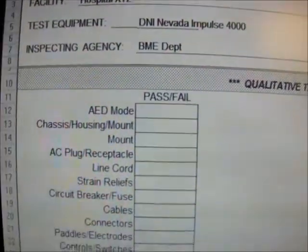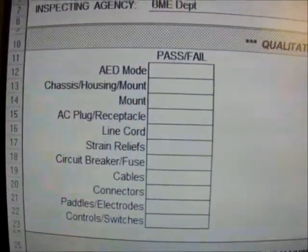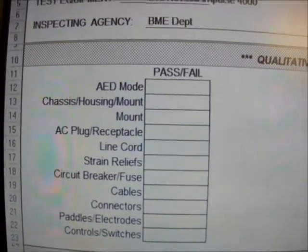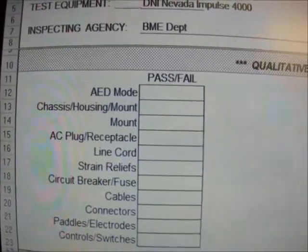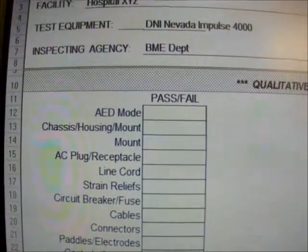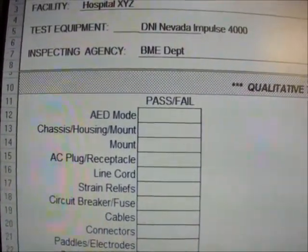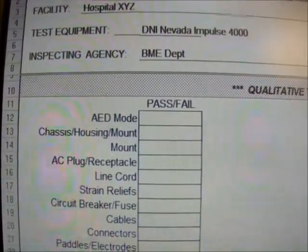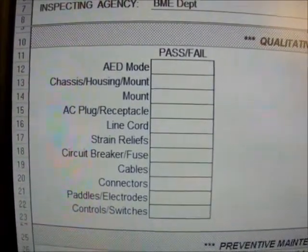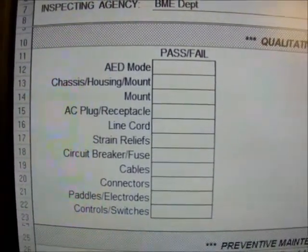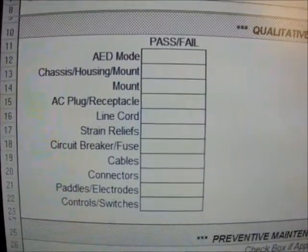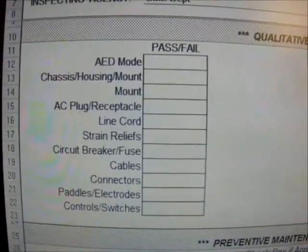Moving along to the qualitative tasks. These are pass or fail tasks, such as AED mode. The following are observations of the AED prompts — both voice and text simulations, such as shock advised, stand clear, perform CPR — all based on the factory default settings for AED mode. We are also checking the chassis, housing mounts, AC plug receptacles, line cord, strain reliefs, cables, connectors, paddle, electrodes, control switches, and summary reports.